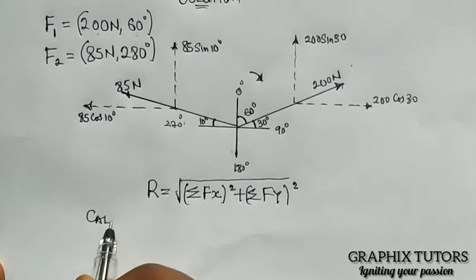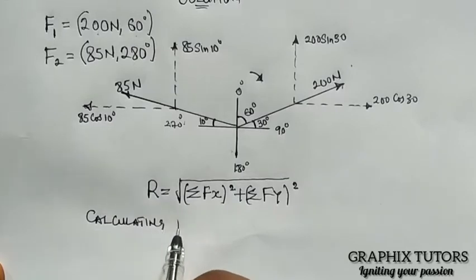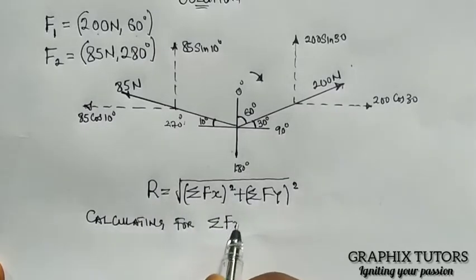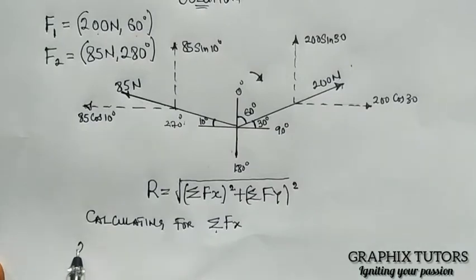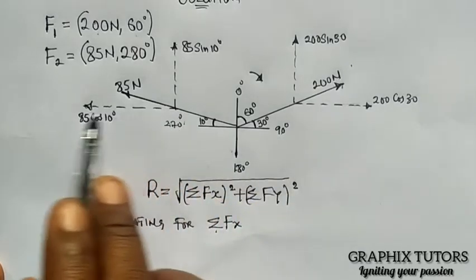So we want to calculate for F of x. So calculating for the summation of the forces acting along the x-axis, we have this facing the right, 200 cos 30.